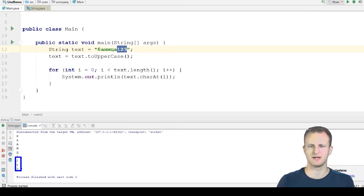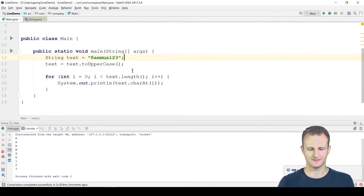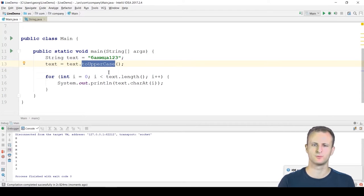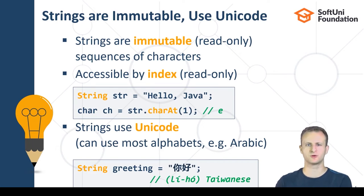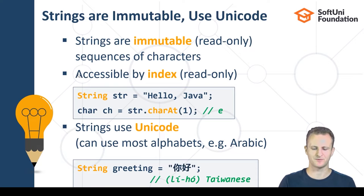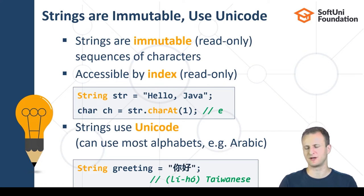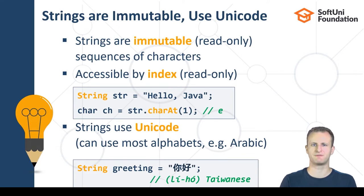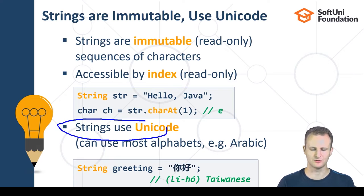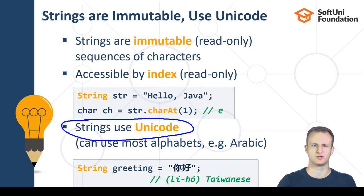Java has full-fledged Unicode support. Non-full Unicode support would mean you can store the data in a character array, since Unicode is just ones and zeros. But full Unicode support means that in addition to storing the information, Java can also manipulate it in a meaningful way — searching for a word in Cyrillic text, capitalizing letters, and so on. Any operation you can do on English characters, you can do in any other language.